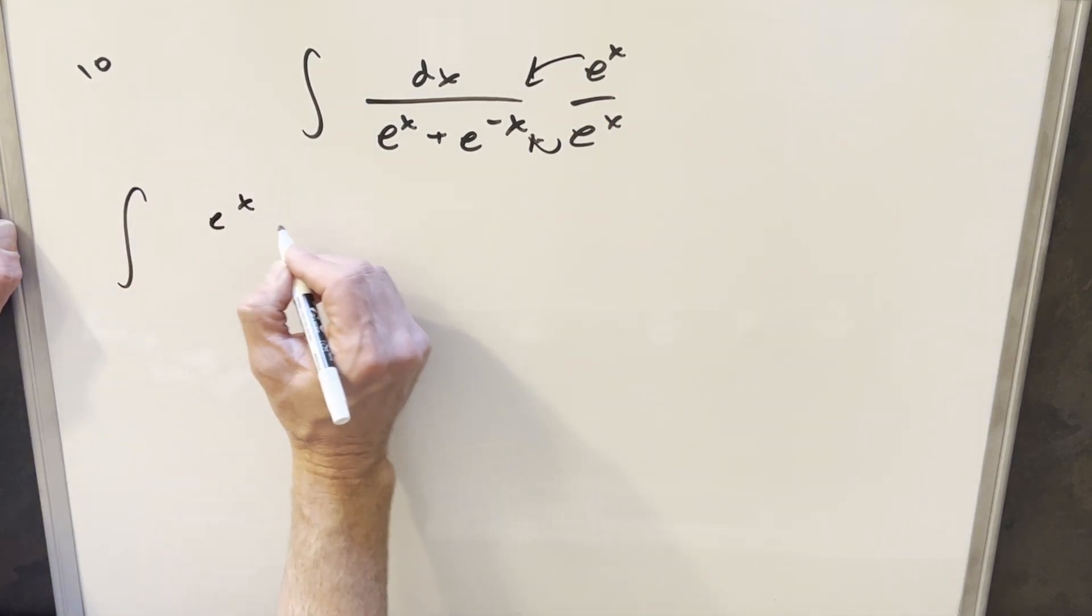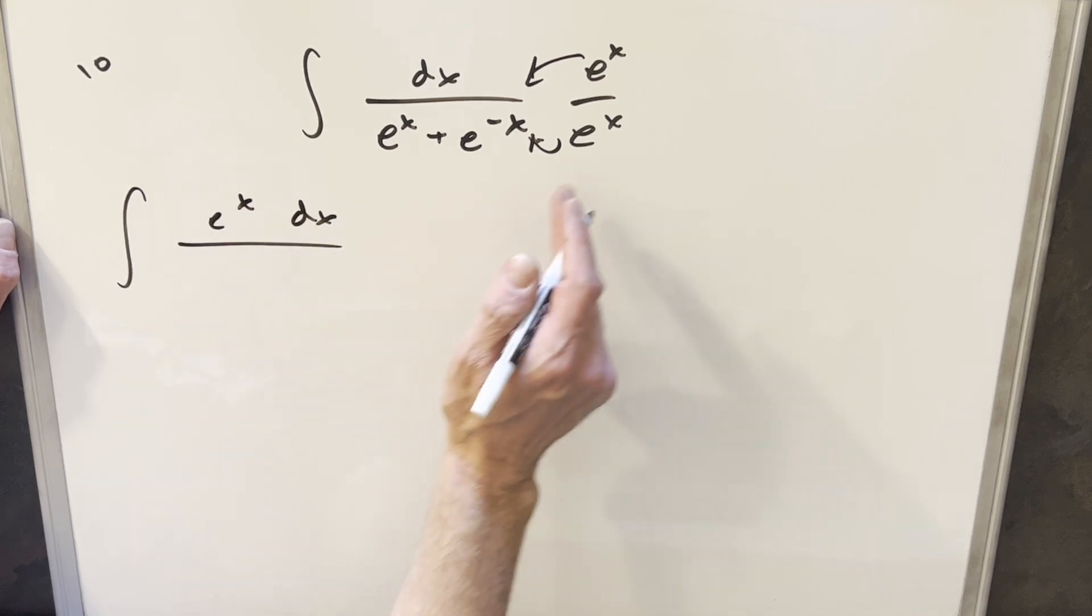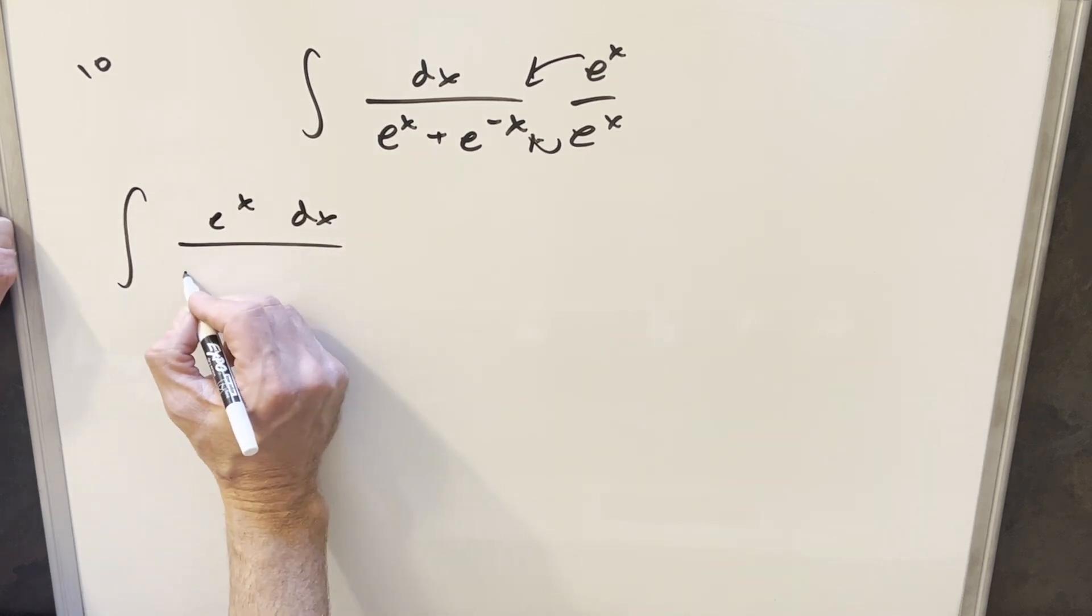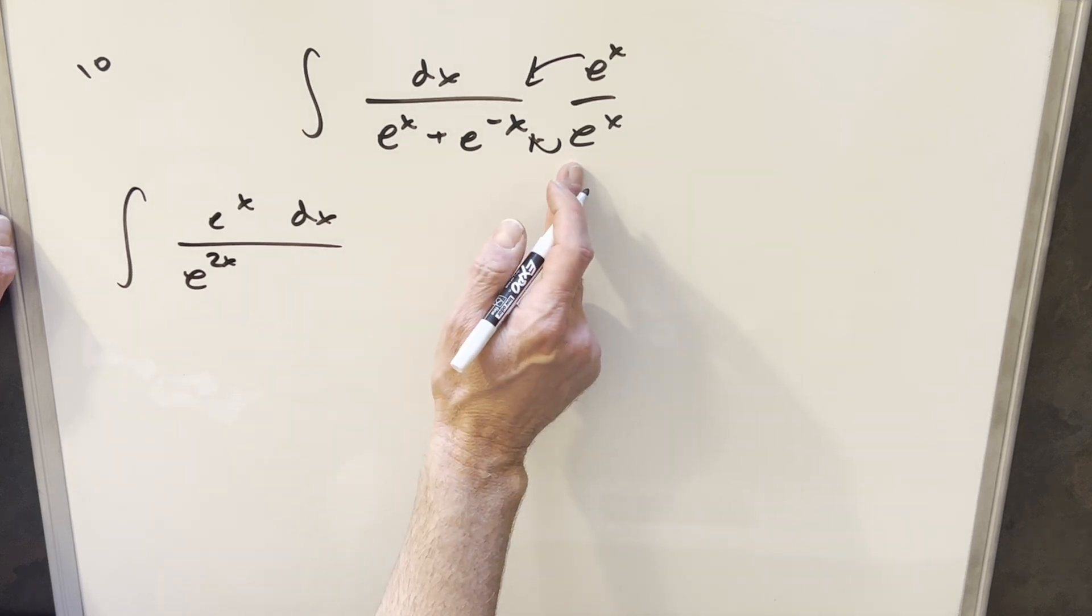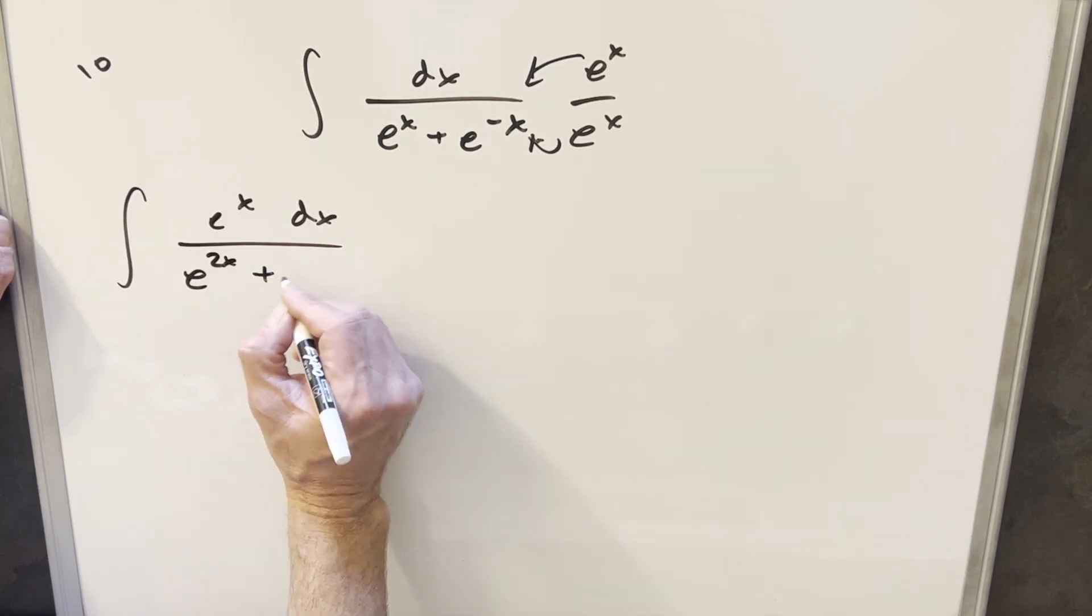In the numerator, we're just going to have e to the x dx. e to the x times e to the x is going to give me e to the 2x. And then this e to the x times e to the minus x is just going to give me a plus 1.